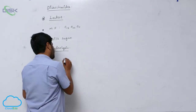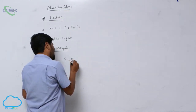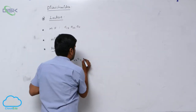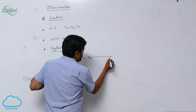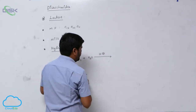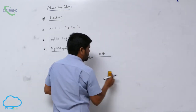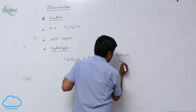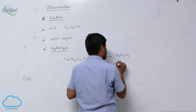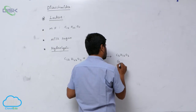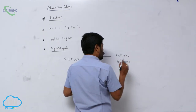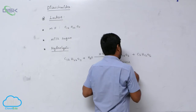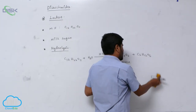Hydrolysis of lactose: C12H22O11 + H2O, in presence of acid medium, forms one unit of glucose — C6H12O6 — plus one unit of galactose.